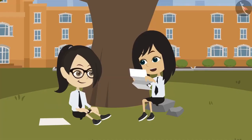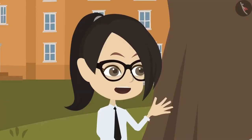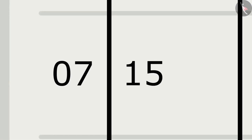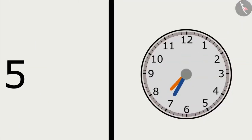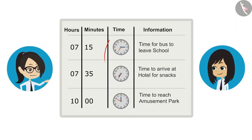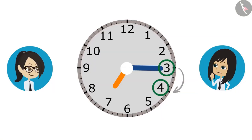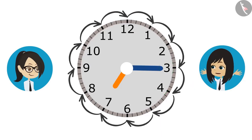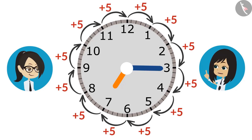First we have to see how much time our bus will take to reach from the school to the hotel. Look at the minute hand: when the time is 15 minutes past 7 o'clock, the minute hand is at 3, and when it is 35 minutes past 7 o'clock, the minute hand is at 7. We only have to find the difference between minutes. The difference from one number to another number is 5 minutes, so we keep adding 5.